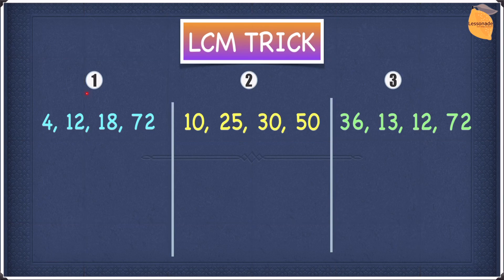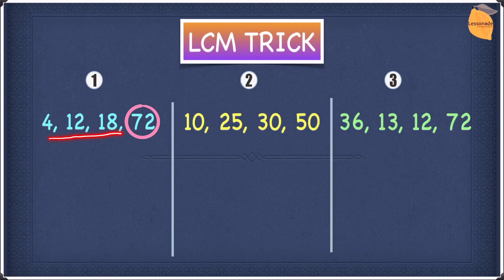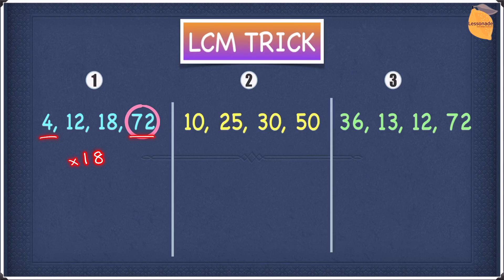Let's get started with the first type of LCM trick, and the example is 4, 12, 18, and 72. Find the highest number — it is 72. Next, see if 72 is divisible by 4, 12, and 18. Yes, it is: 18 goes into 72 four times, 12 goes into 72 six times, and 4 goes into 72 eighteen times. So this means our LCM for this question is 72. As you guys could see, despite this question being a bit longer, we still did this in a matter of seconds.